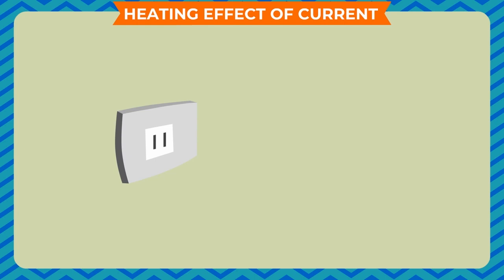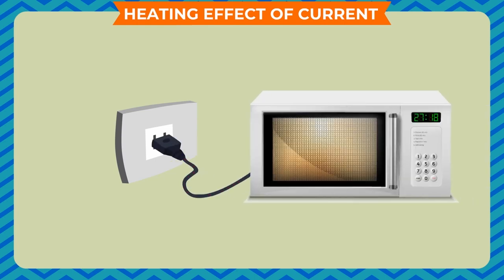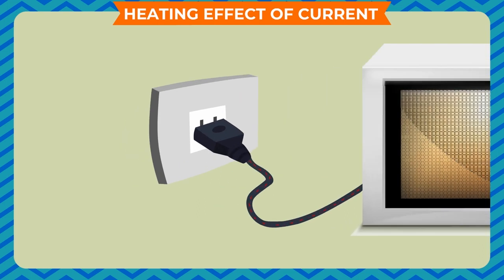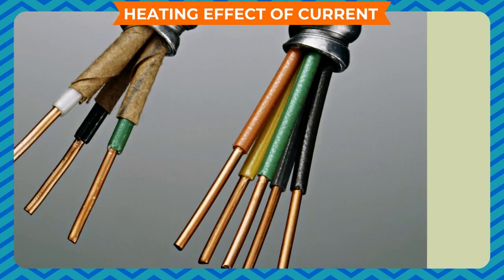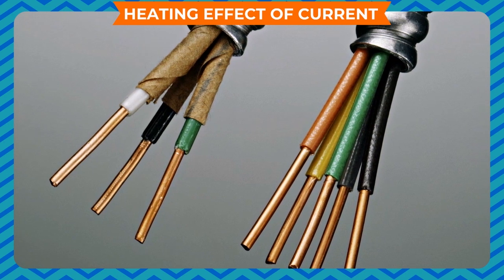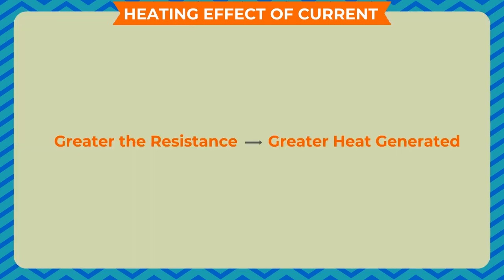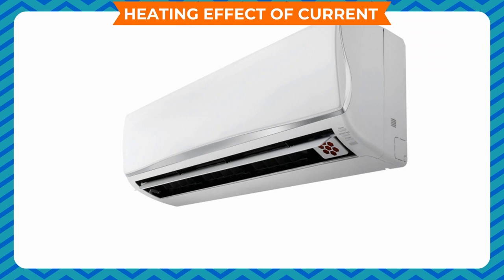Heating effect of current: when electric current flows through the wires of an electric circuit, the wire gets heated up. This is because some of the electric energy gets transferred into heat energy. This effect is called the heating effect of current. When current flows through an electric wire, the wire tries to resist the current flow through it. This is called resistance. Different metals offer different resistance to the path of flow of electricity. Greater the resistance, greater will be the heat generated. Thus, if an appliance offers greater resistance, it gets heated up quickly.